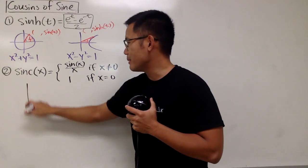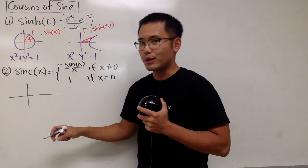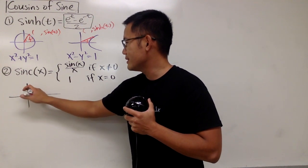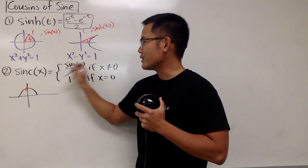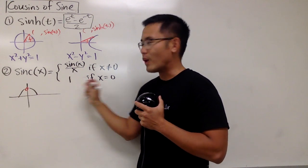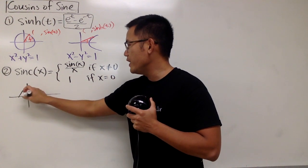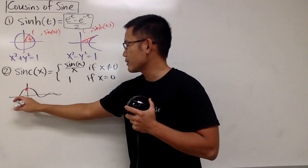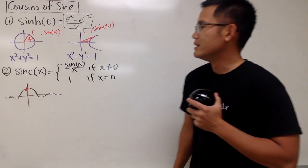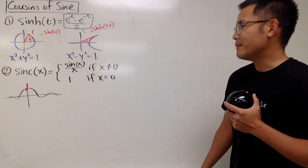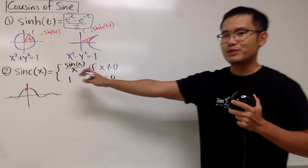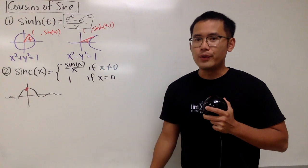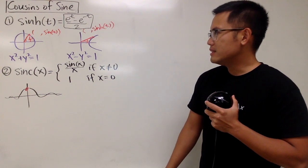That way, you can make it a continuous function, and the picture will look like this — it wiggles out and originally has an open circle at x=0, but with the value of 1 there, you fill in the circle. This is the sinc of x. In engineering, you will often have to use this.